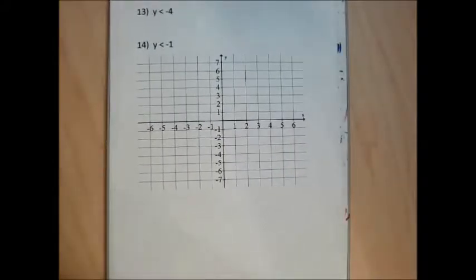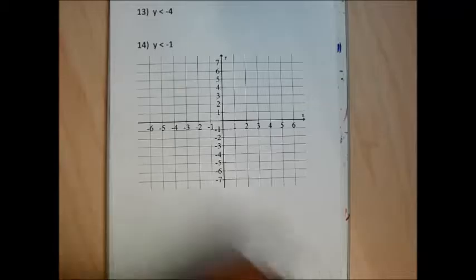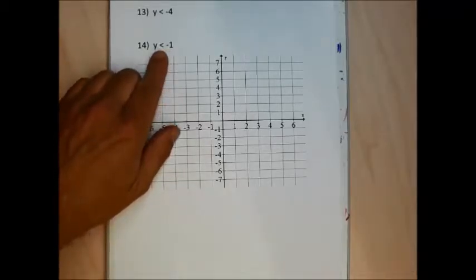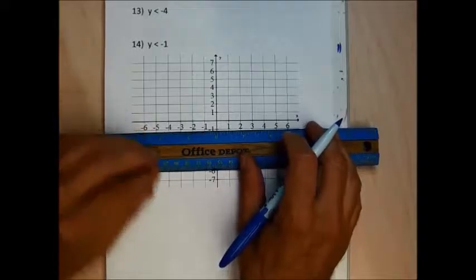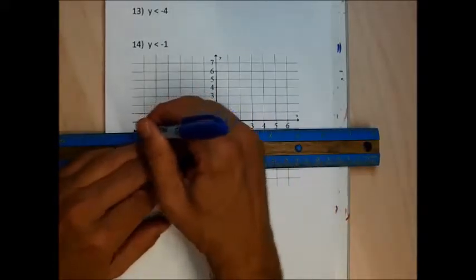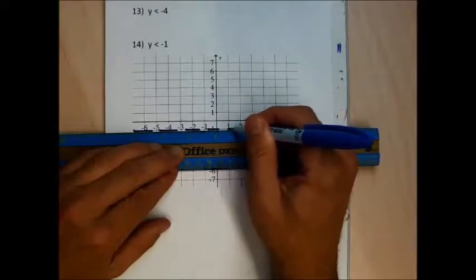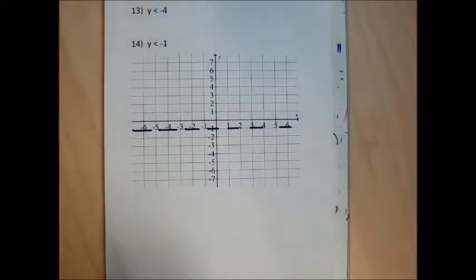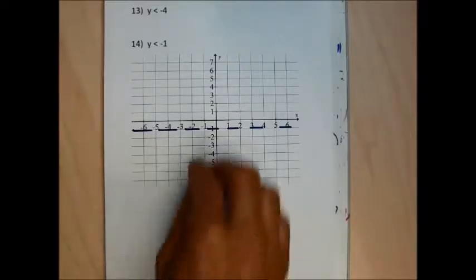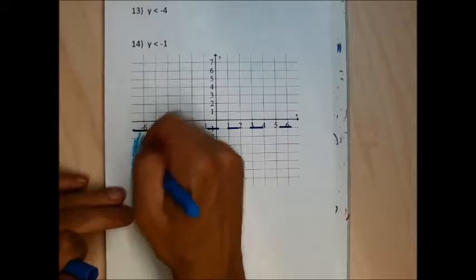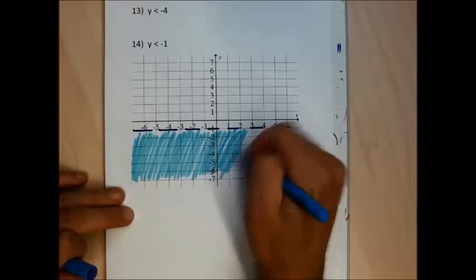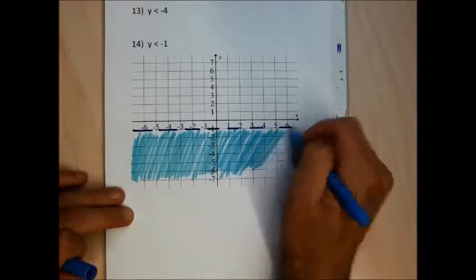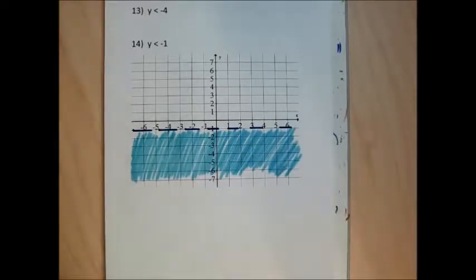For problem 14, it's a y with a less than. I'm going to start by drawing a dashed horizontal line through negative 1 on the y-axis — it's dashed because I don't have the or-equal-to. I'm going to identify the points with y-coordinates less than negative 1. Less than means smaller and y's get smaller as we go down, so I'm going to shade every single point under that line.